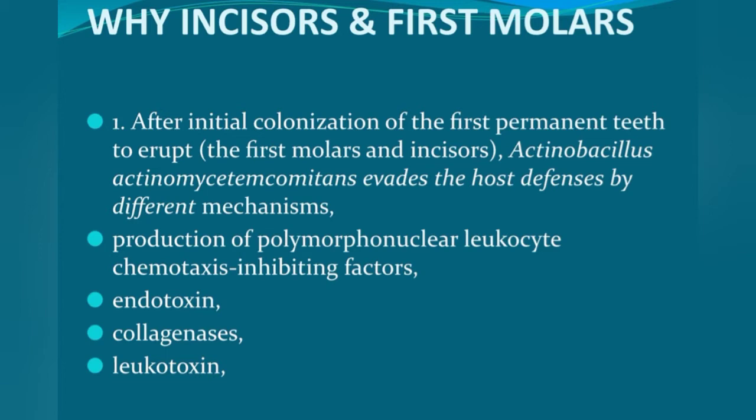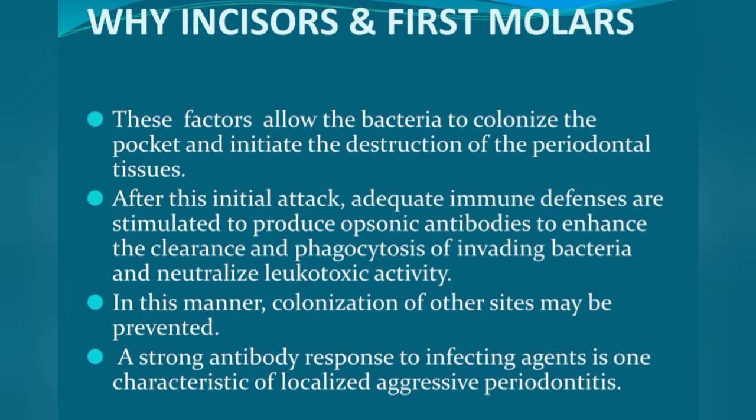The mechanisms include production of polymorphonuclear leukocyte (PMN) chemotaxis-inhibiting factors. PMNs normally phagocytose and kill bacteria, but Actinobacillus actinomycetemcomitans invades the host defense by producing factors that inhibit PMNs. It also releases endotoxins, collagenase, and leukotoxin — all of which cause destruction of the periodontium of first molars and incisors. After this initial attack, immune defenses produce antibodies that neutralize leukotoxin activity.